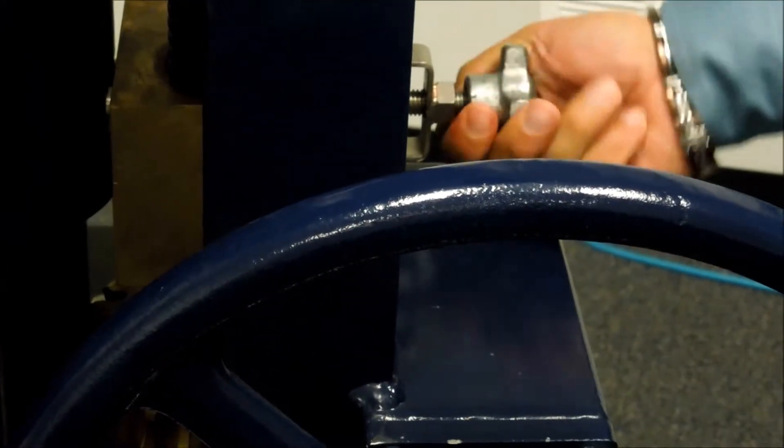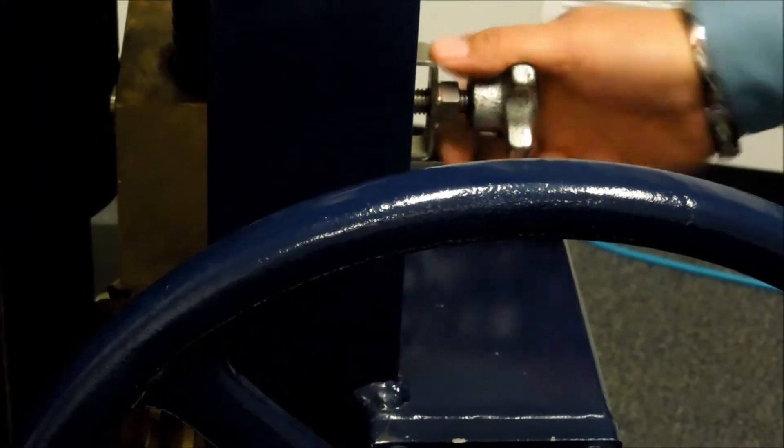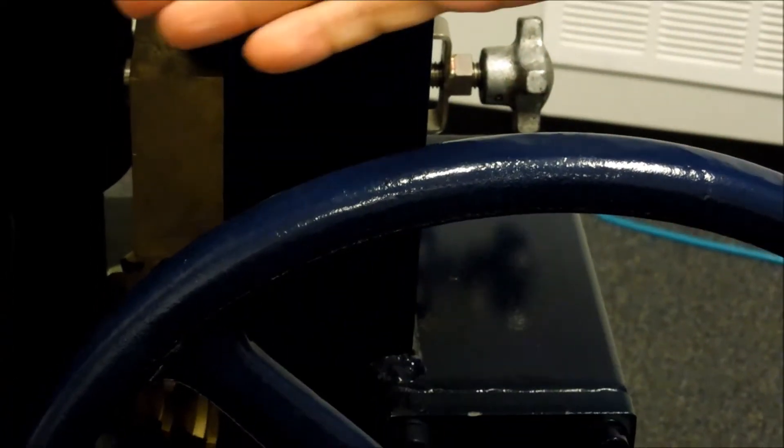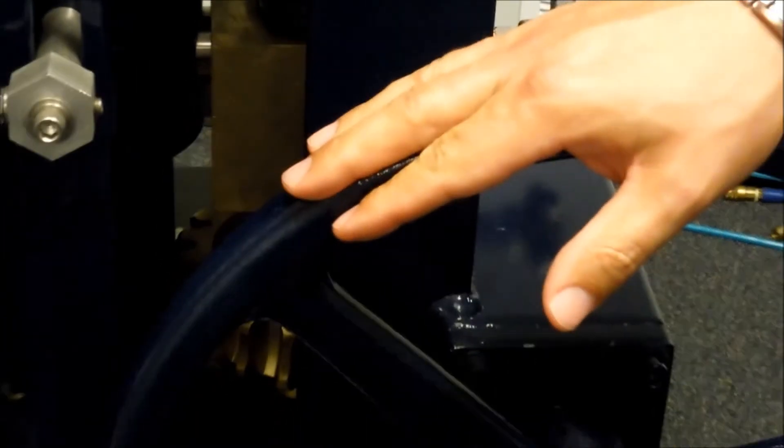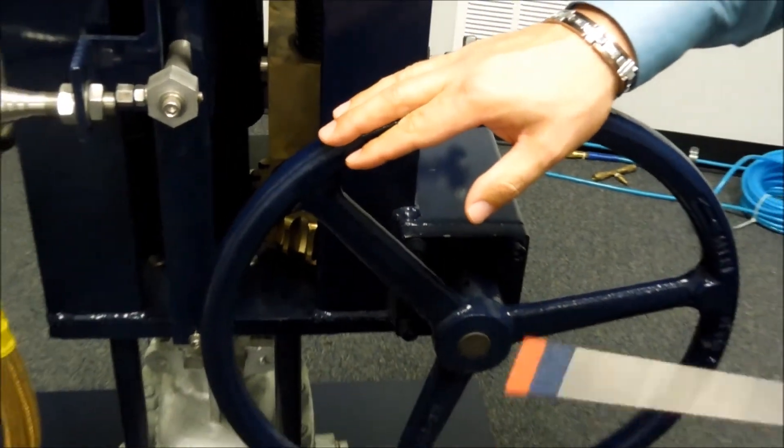Okay, so there. Now we have our engagement pin fully engaged into our coupling block. At this point, you're free to use the hand wheel and it will open and close your valve.